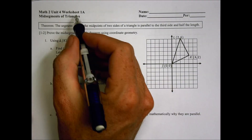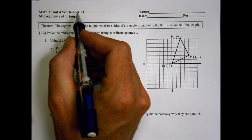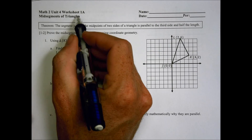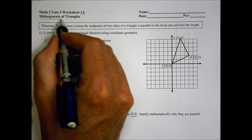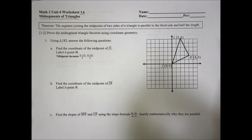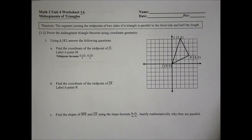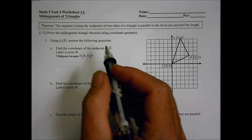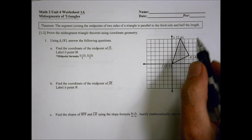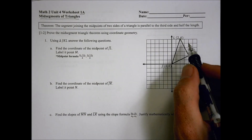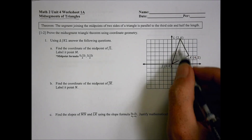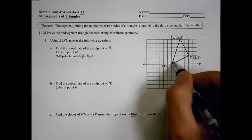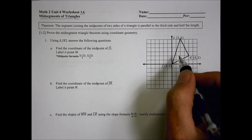Hey, this is Math 2, Unit 4 — beginning a new unit today. This is Worksheet 1a, talking about the mid-segments of triangles. In class you had a lesson about this today, and there are a few formulas you probably talked about for how to find a midpoint between several different points.